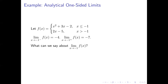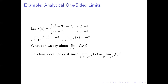Notice that these two one-sided limits disagree with each other. You might ask: what is the value of the ordinary two-sided limit — is it negative four, negative seven, or something else? In this case it does not exist. The ordinary two-sided limit as x approaches negative one is undefined, because the two one-sided limits are not equal to each other. This will happen in general: whenever the one-sided limits as you approach the same number disagree, the ordinary two-sided limit does not exist.